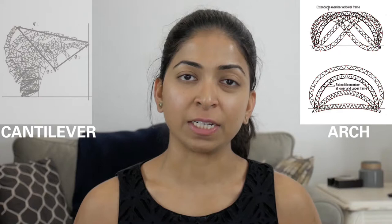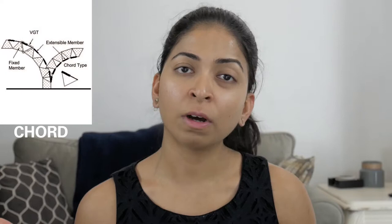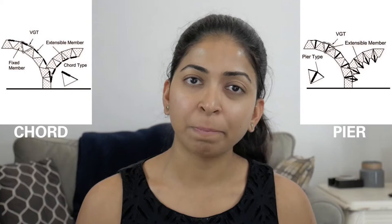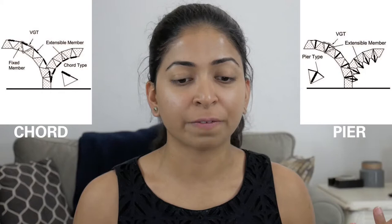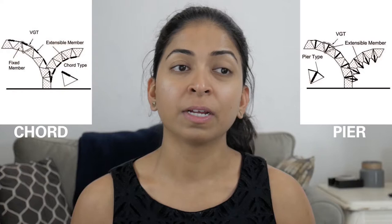At an individual level, there are two different VGT components: it can either be a chord type or a peer type. As the name suggests, the extensible elastic member is either a chord or a peer. When comparing these two in terms of the stiffness of the overall structure, the precision of control, and the power of the elastic member, the peer type was much more successful than the chord type.